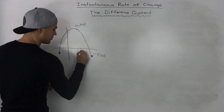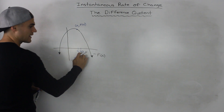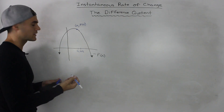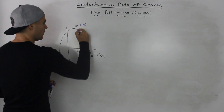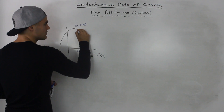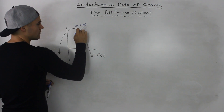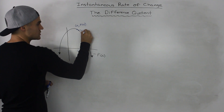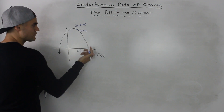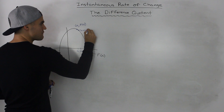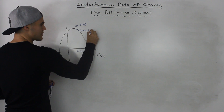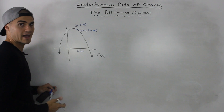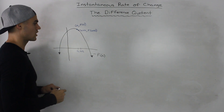So let's say I pick a point with an x value of a plus h, where h is just some kind of small number. That point is going to have an x value of a plus h, and the y value of that point is going to be f of a plus h, because our function is defined as f of x in this drawing.